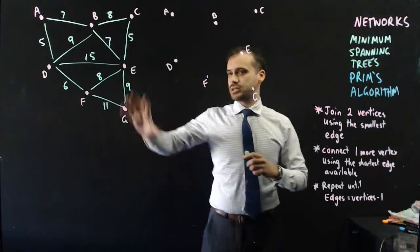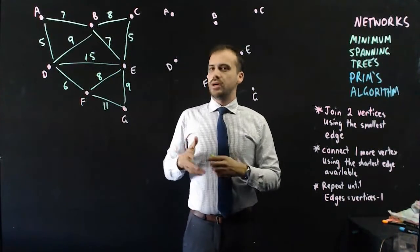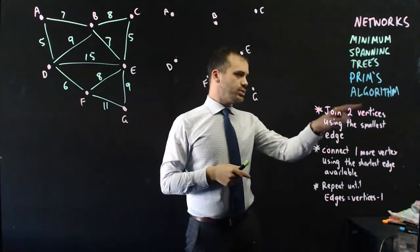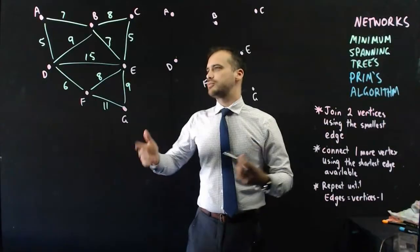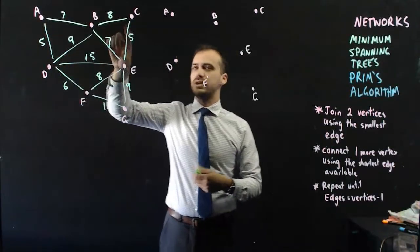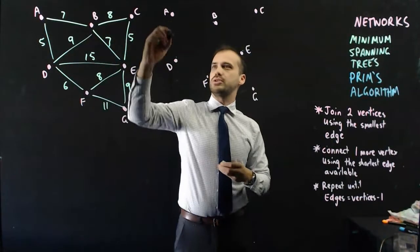So, we're going to try it with another one here, a slightly more complicated looking one. First step, join two vertices using the smallest edge. There's a 5 here and a 5 here. It doesn't matter which one I use. I'm going to use A to D.